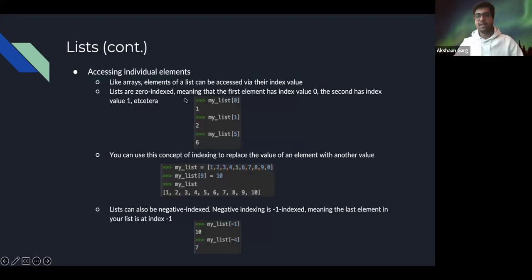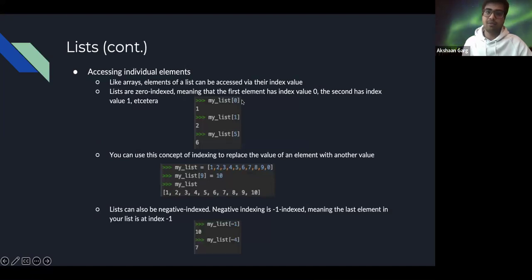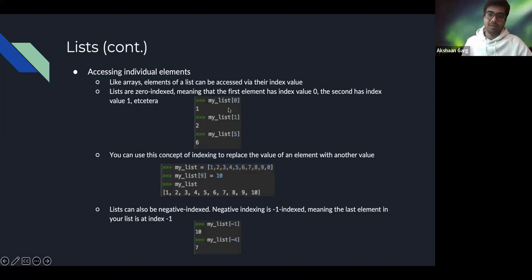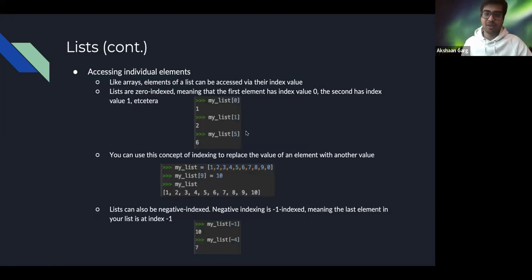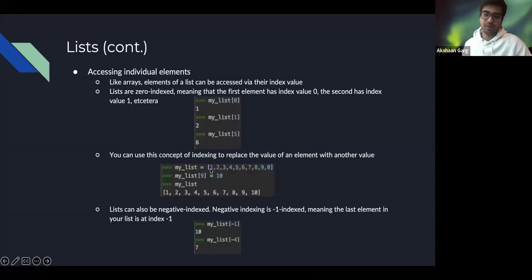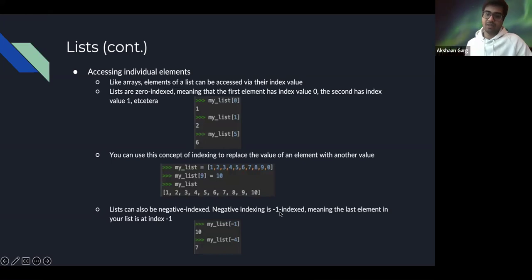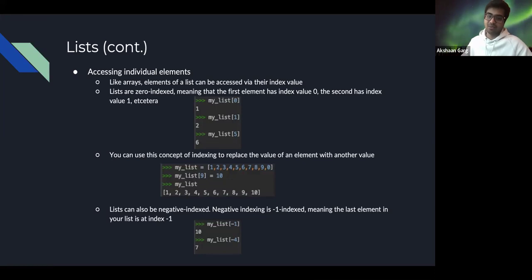Accessing individual elements: like arrays, list elements are accessed via their index value. Lists are zero-indexed, meaning the first element has index 0, the second has index 1, and so on. You can also use negative indexing — the very last element is at index -1, the second last is -2, and so on.